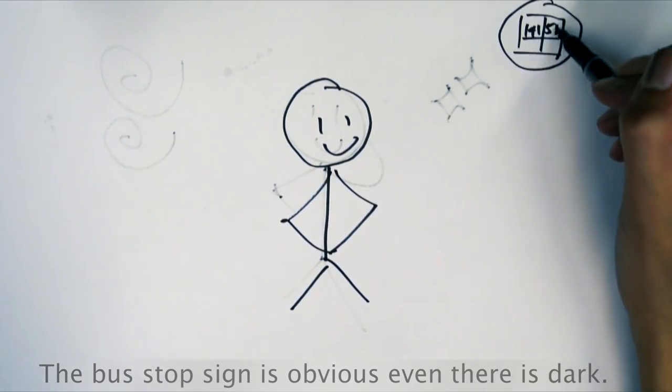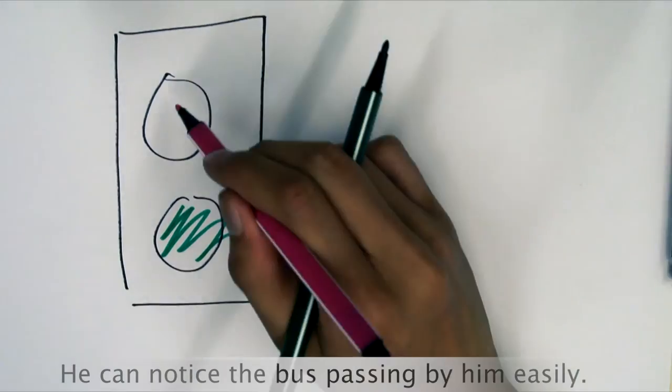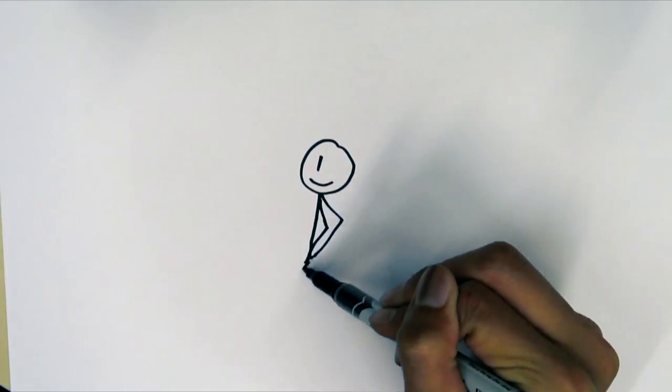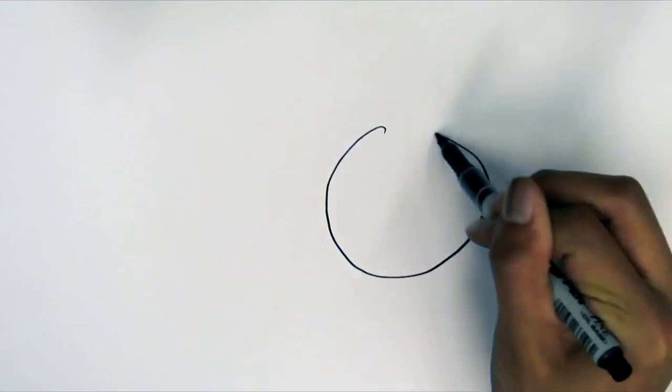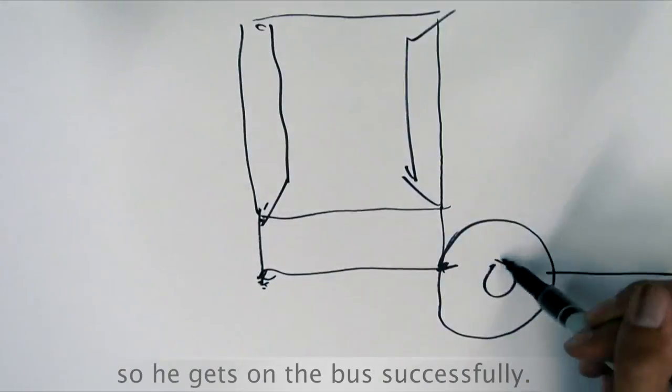The bus stop sign is obvious even when it is dark. He can notice the bus passing by him easily. The ground is not slippery so he can get on the bus successfully.